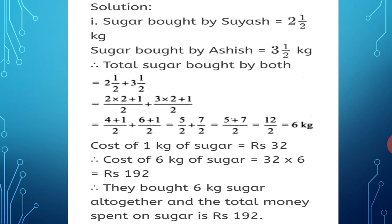Sugar bought by Suyash = 2 and 1 upon 2 kg. Sugar bought by Ashish = 3 and 1 upon 2 kg. Total sugar = 2 and 1 upon 2 plus 3 and 1 upon 2. Convert: 2 × 2 + 1 upon 2, plus 3 × 2 + 1 upon 2, giving 4 + 1 upon 2 plus 6 + 1 upon 2, which equals 5 upon 2 plus 7 upon 2.